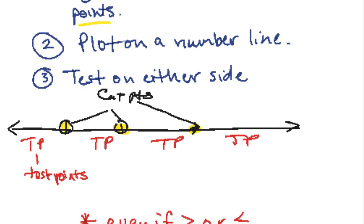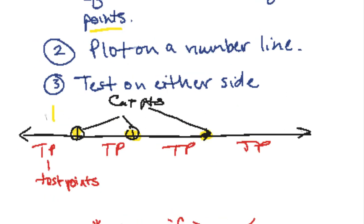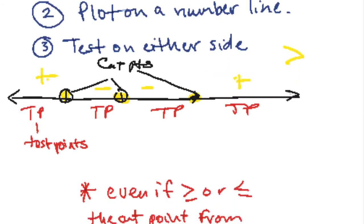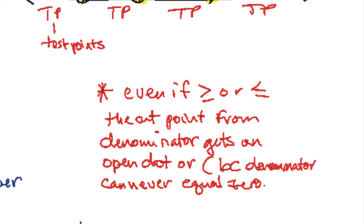Do your test points in the function, both the numerator and denominator, and just answer accordingly. If it's plus, minus, plus, and the question is greater than 0, you would only pick the plus areas for your answer. All this will be apparent once you watch the example videos.